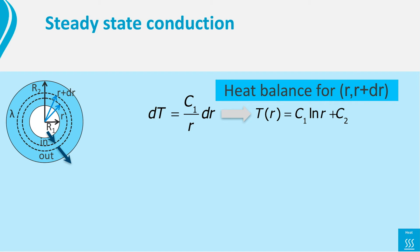T equals c1 times the natural log of r plus c2. Both integration constants c1 and c2 follow again from the two boundary conditions we have. At r equals r1, T is T1, and at r equals r2, T equals T2.